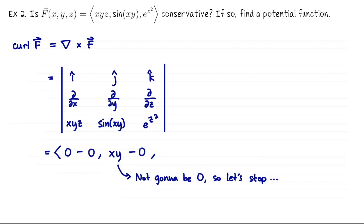So if I'm just testing whether this vector field is conservative, there's no reason to continue — let's stop because it's not conservative. If you're disappointed that I stopped, don't worry. In the next example we will compute the entire curl. So if you want to see the full computation, let's go on to Example 3.